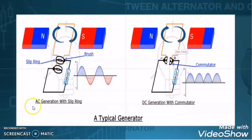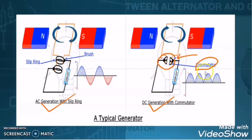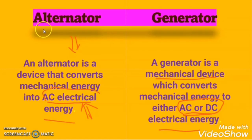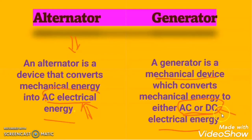The generator can produce both AC and DC supply by using the commutator arrangement. I will try to cover the commutator of the DC generator in another video because it is a very vast topic. But as of now, understand that in an alternator we cannot do the commutation process, but in a generator we can do commutation — so we can get DC supply due to commutation. If there is no commutation, we will get only AC supply, same as an alternator.